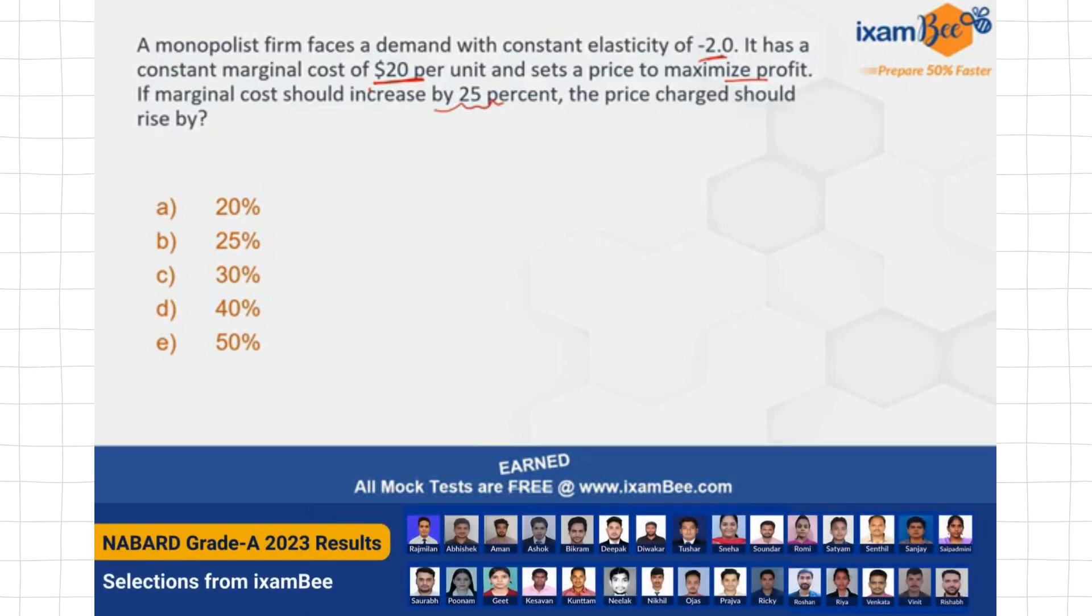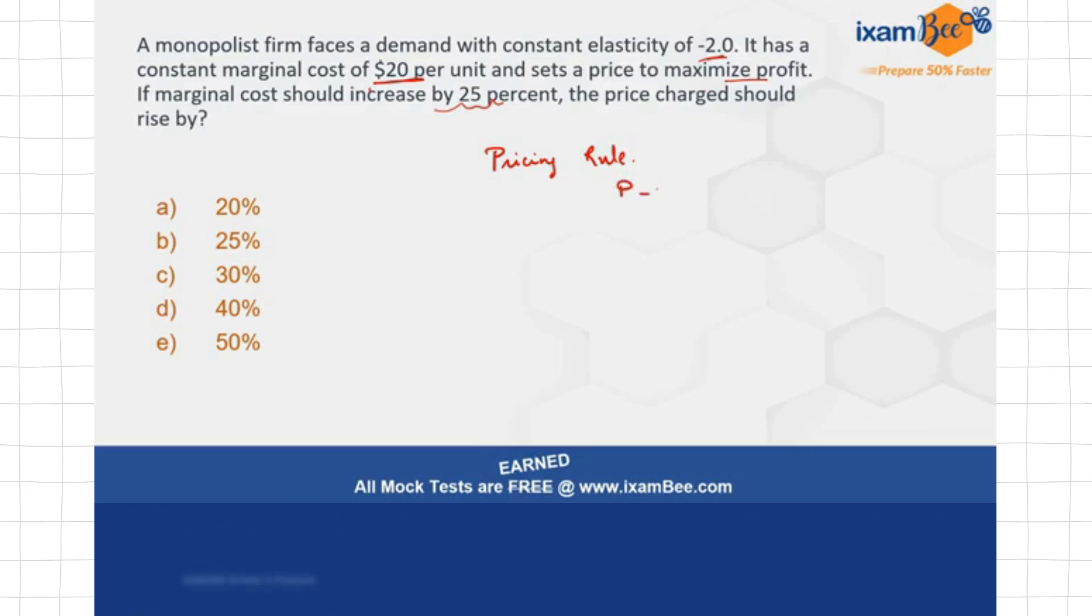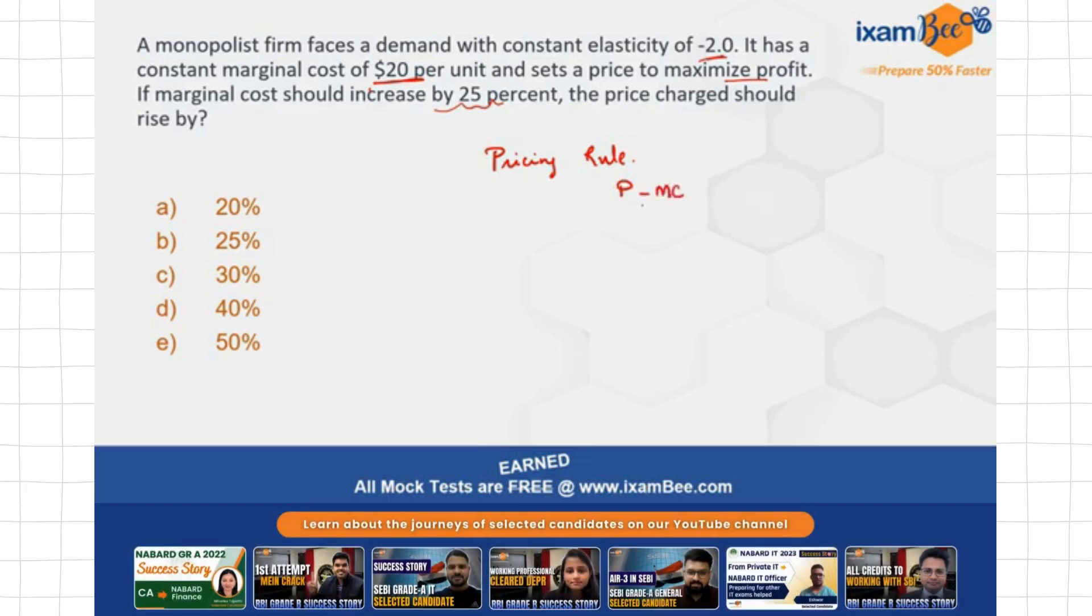If not, let's see how do we solve such questions. See, for such questions you need to remember the monopolist pricing rule. There is a pricing rule for the monopolist which is given by this relationship. The pricing rule in terms of elasticity, price, and marginal cost is given by: (Price - Marginal Cost) / Price = -1 / Elasticity of Demand. This is the pricing rule for the monopolist in case of constant elasticity of demand.